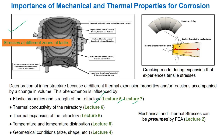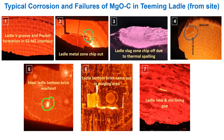Thermal conductivity and thermal expansion of the refractory were discussed in lecture 6; temperature distribution in lecture 8; geometrical conditions — size, shape, etc. — in lecture 4. Mechanical and thermal stress distribution can also be estimated by FEA, discussed in lecture 2. During expansion, cracking mode experiences tensile stresses, and face layers crack in the weakest zone during spalling.